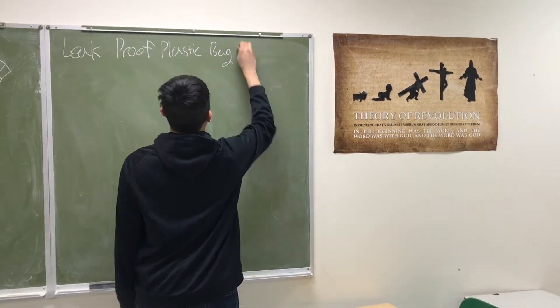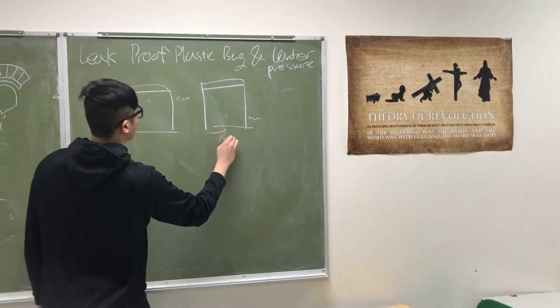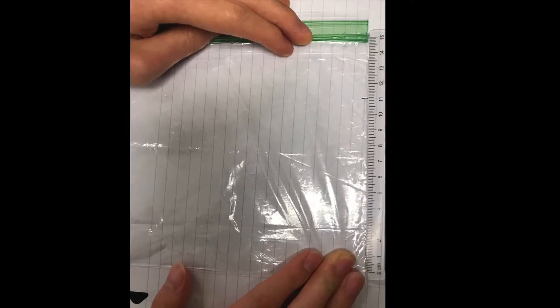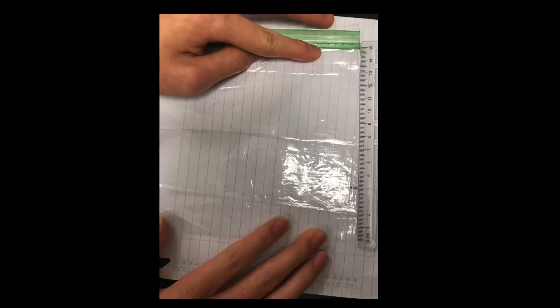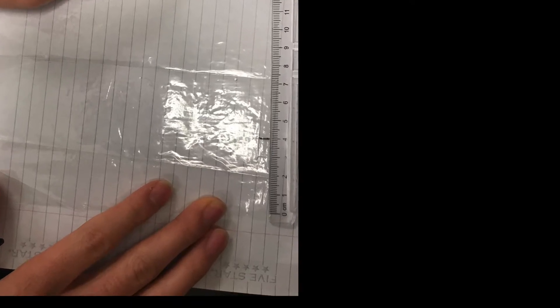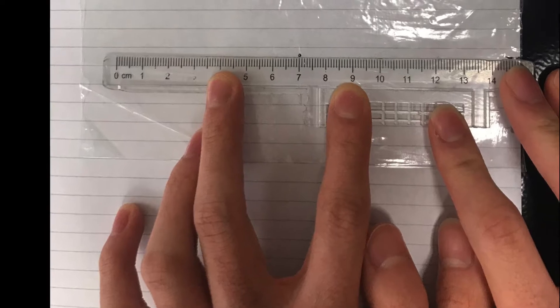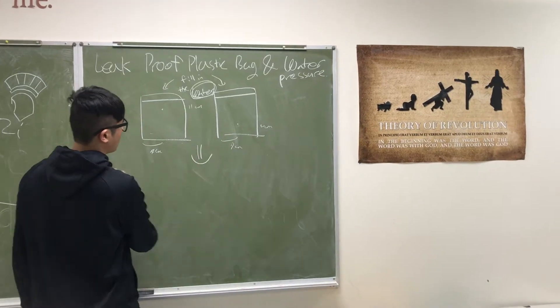Okay, here comes the experiment. As you can see, we made different points varying in height on both plastic bags. The first bag has a point which has a height of 11 cm from the bottom. The second bag has a point which is 4 cm from the bottom. And both points are 7 cm from the side. Fill up both bags with water. Now comes the experiment.